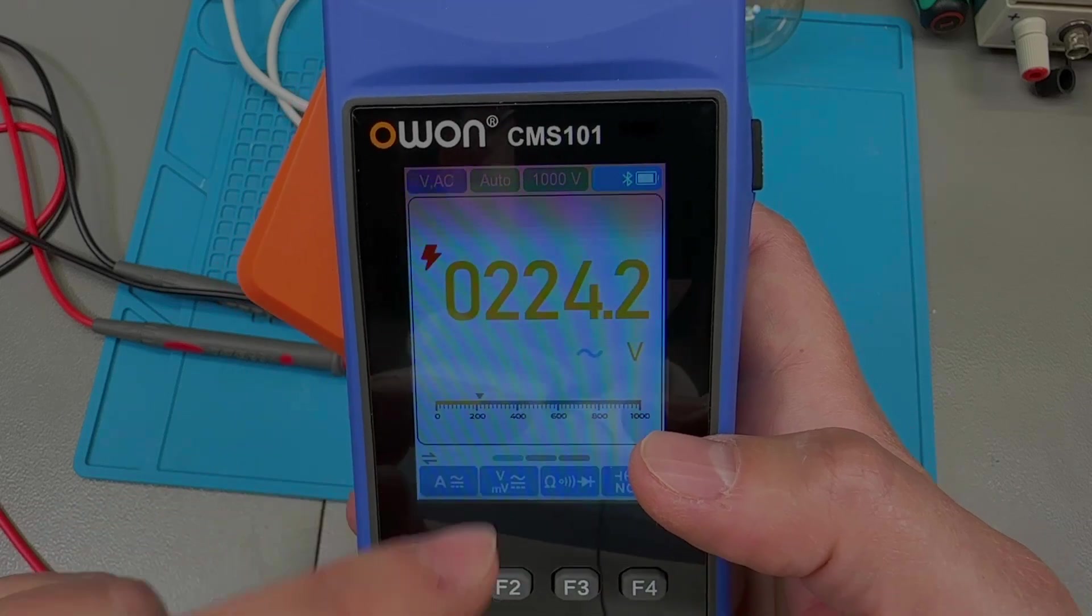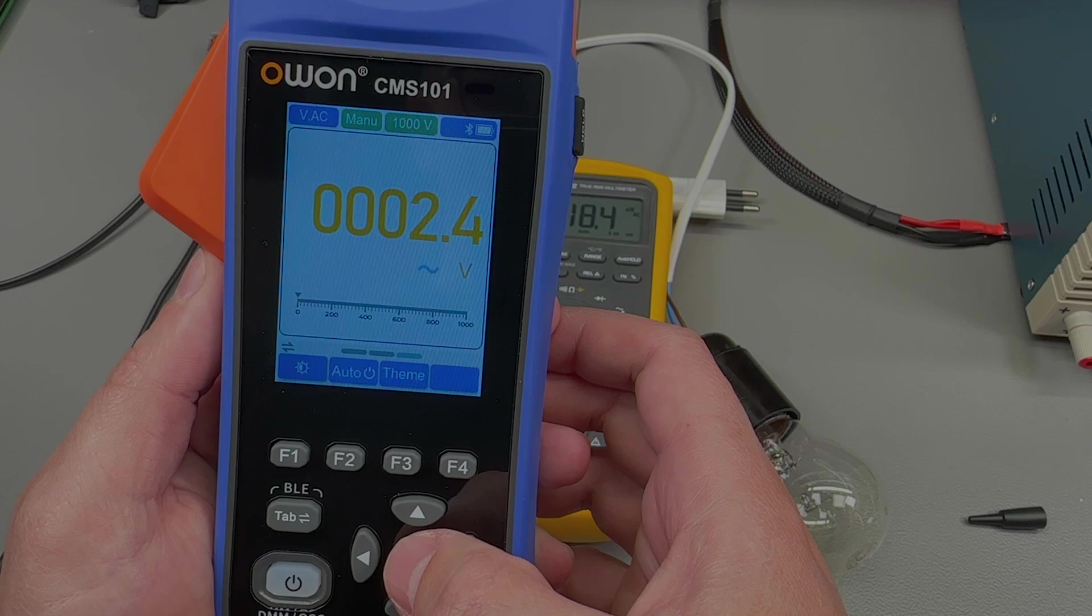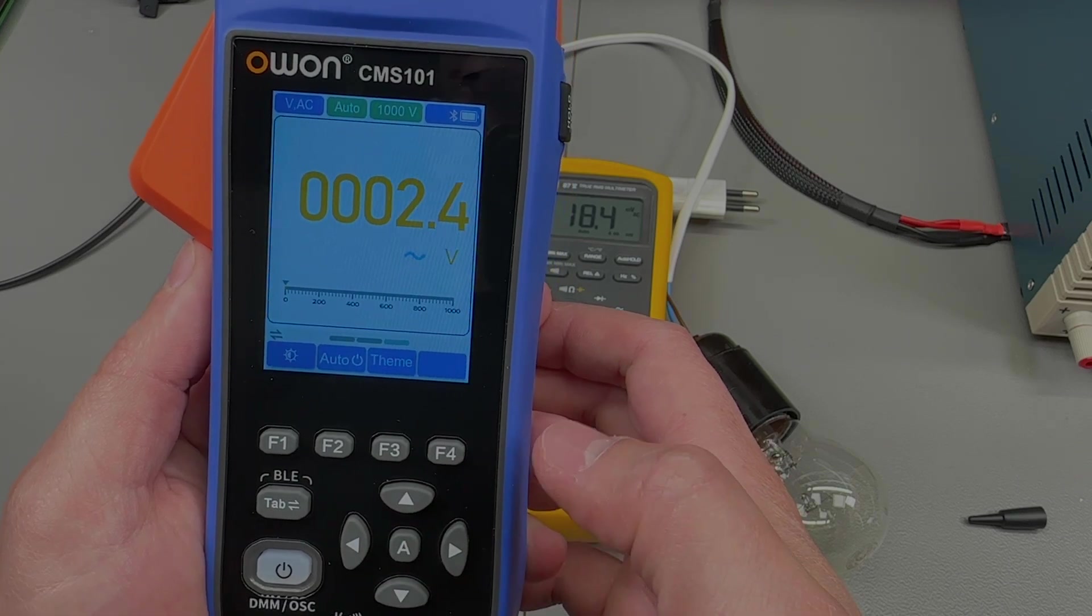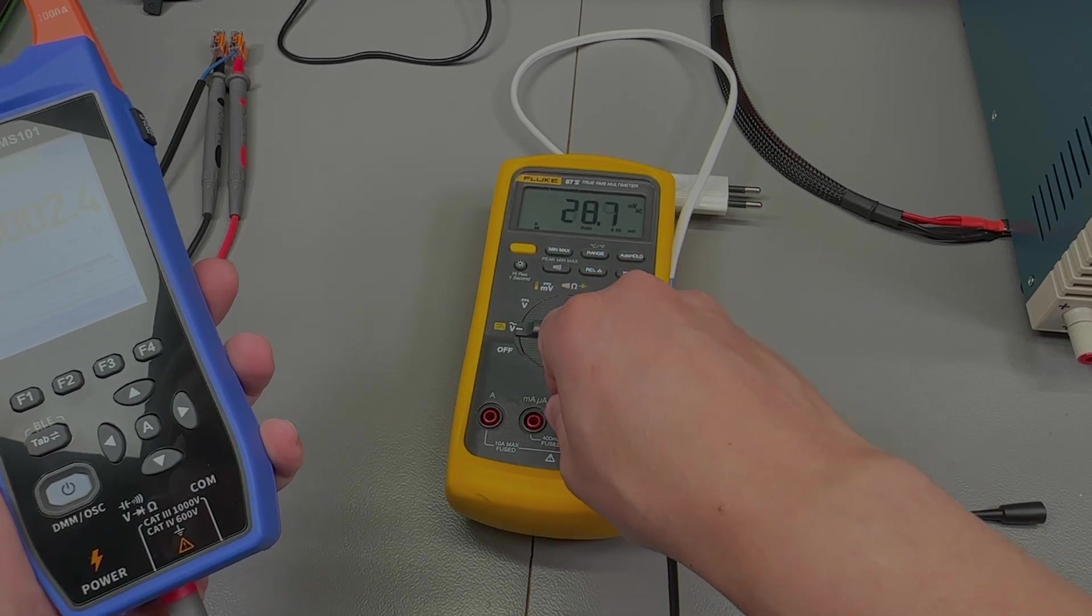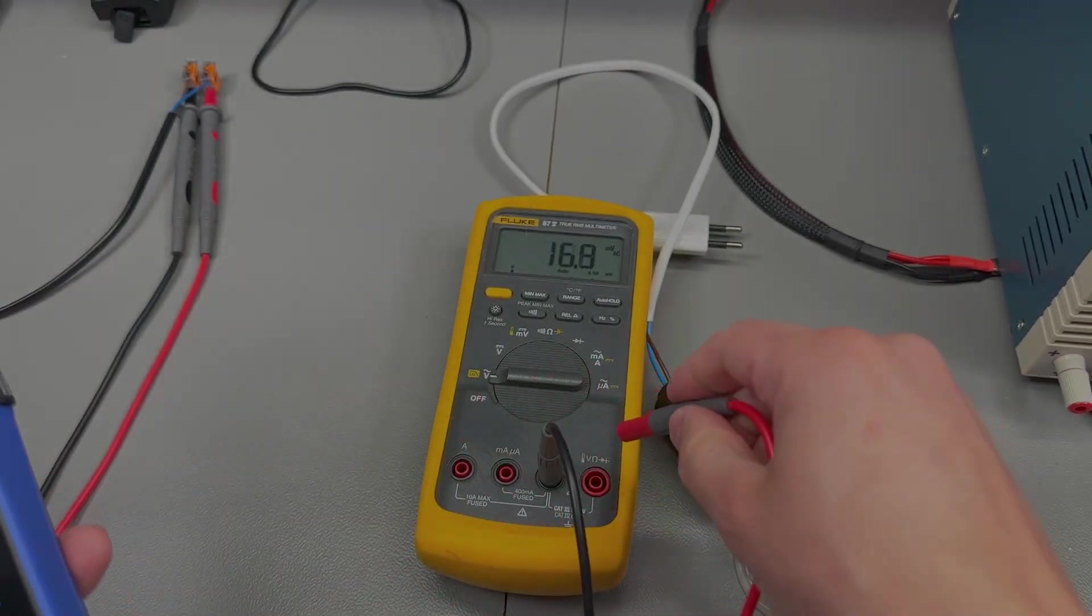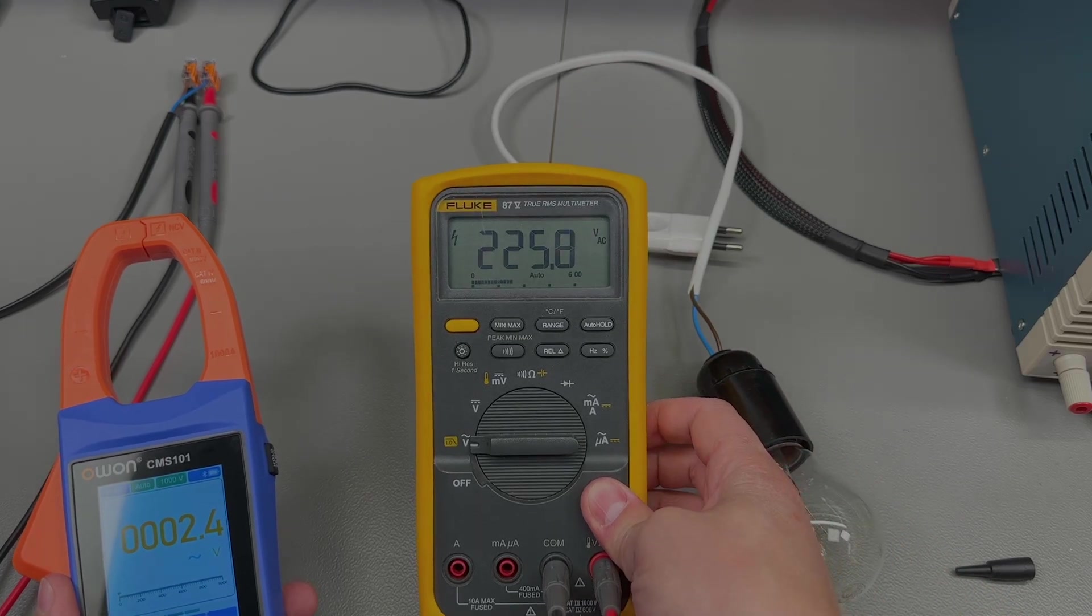And on top of the slow auto-ranging, I've also noticed some kind of a bug where it would simply get stuck and not auto-range when I connect it to mains AC 240 volts, even though it was on the correct AC voltage measurement function. Only turning it off and back on again would get it back on the right track.